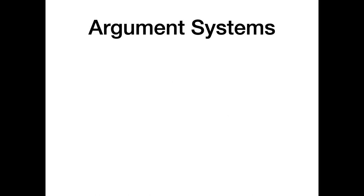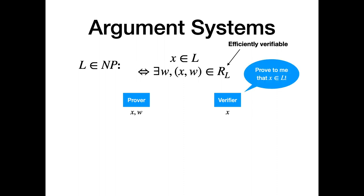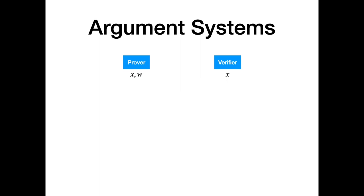I'll start by going over what an argument system is. Let's say we have a language L in NP, which means that for every x in L, there is an efficiently verifiable witness W for x. The story is that we have a prover that knows x and W, and a verifier that knows only x, and the verifier wants to be convinced that x is in L. An argument system is a protocol, potentially randomized, that the prover and the verifier can participate in, such that if x is in the language, then the verifier is convinced of that.